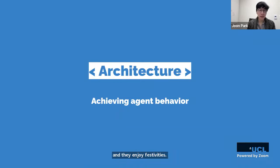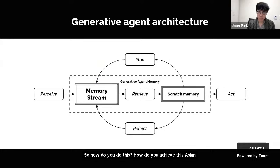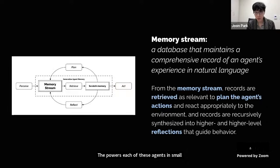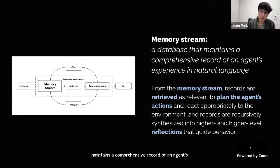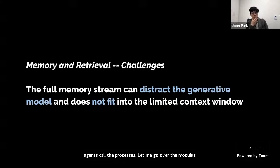So how do we achieve this agent behavior? Our main contribution is this architecture. At the center is what we call the memory stream — the primary database that maintains a comprehensive record of an agent's experience in natural language. From the memory stream, records are retrieved as relevant to the agent's cognitive processes. Let me go over the modules of this architecture in more detail.